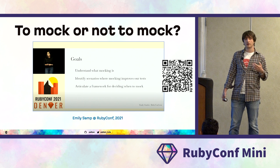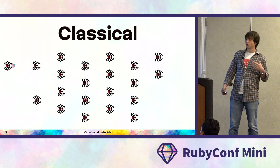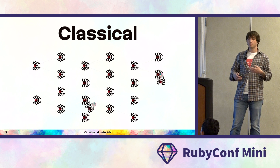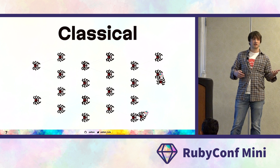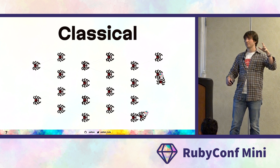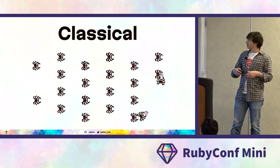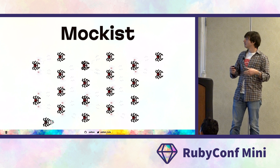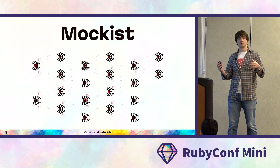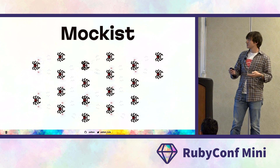For today, I want to focus on one important difference between these two styles, based on how code execution paths happen within the codebase. When you use the classical approach, every object is real and code execution paths in your test environment are the same as in your production application. When using the mockist style, however, we lose this connectivity because every time we hit a fake object, we introduce a gap in our execution path — it's not really an execution path but a collection of partial paths, forming a heavily disconnected communication graph.